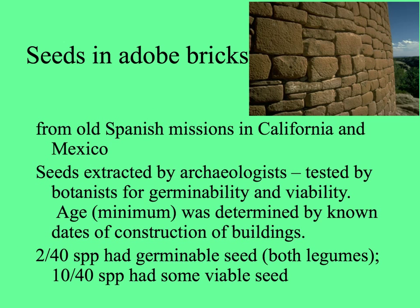An interesting study was done in California taking seeds from the inside of adobe bricks — made of clay or compacted soil, which would have seeds of the plants around there. Biologists took bricks from old Spanish missions; actually the seeds were extracted by archaeologists, and the botanists tested them for viability and also germinability. The minimum age of the seeds was determined by the known dates of construction of the buildings.